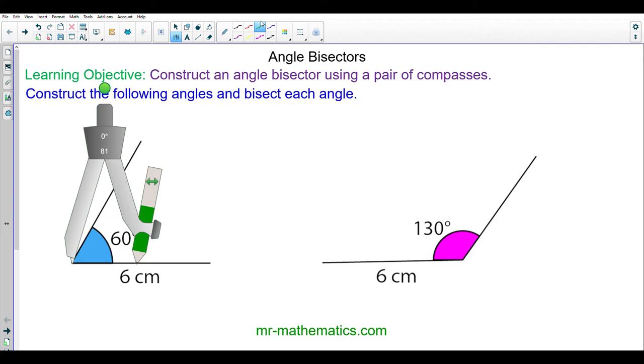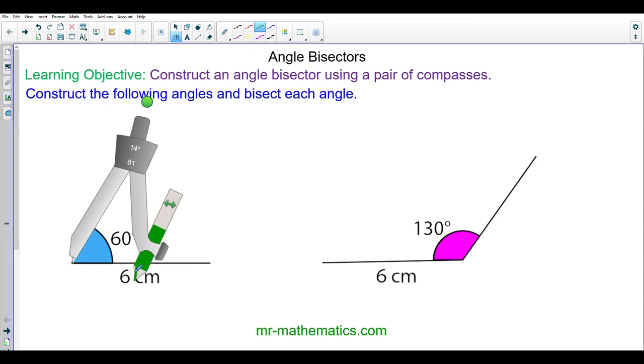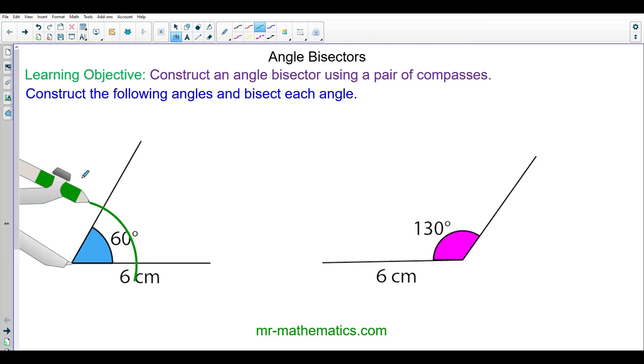To begin with, I'm going to construct an arc from the intersection where the two lines form the angle. This will give me two points along each of the lines that have the same distance from where they meet.